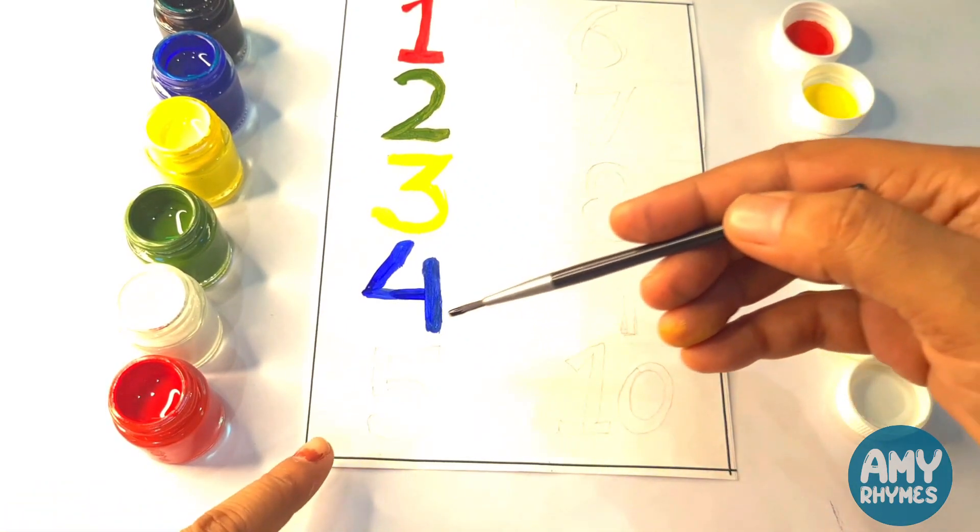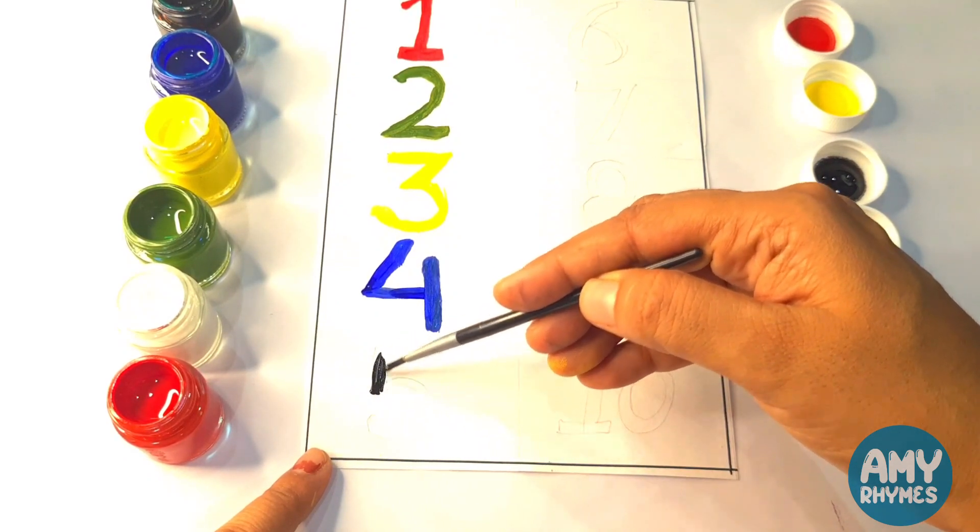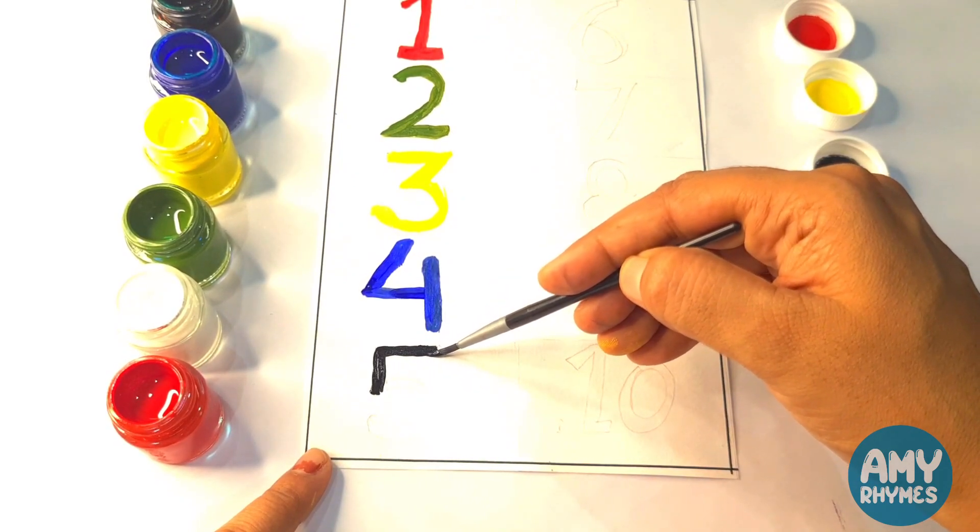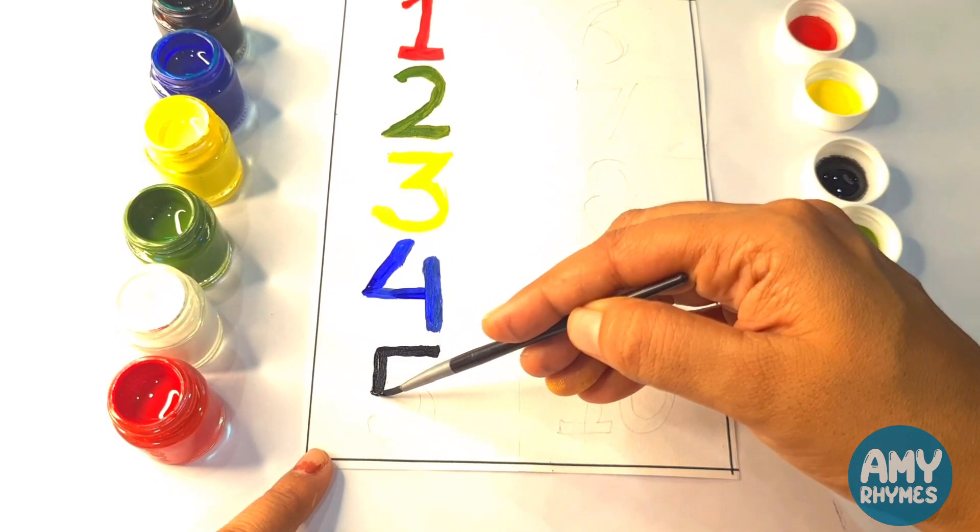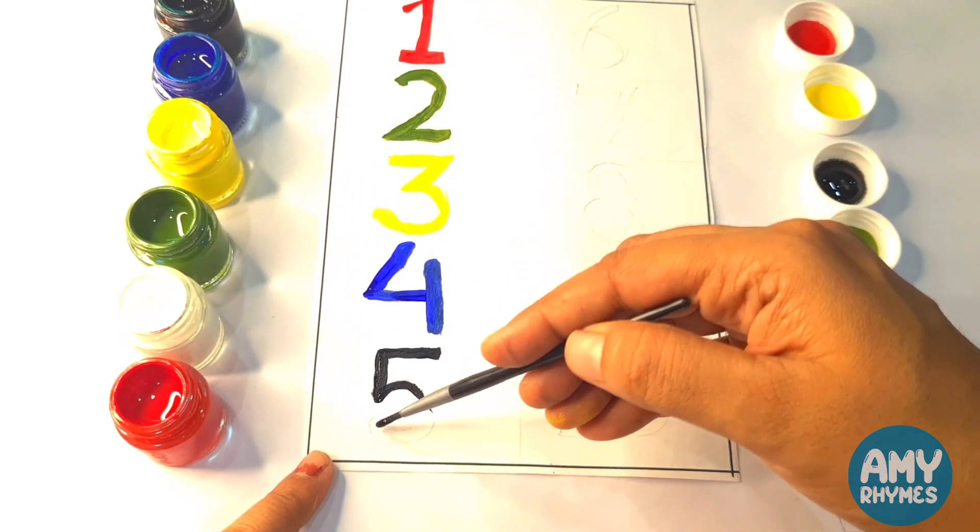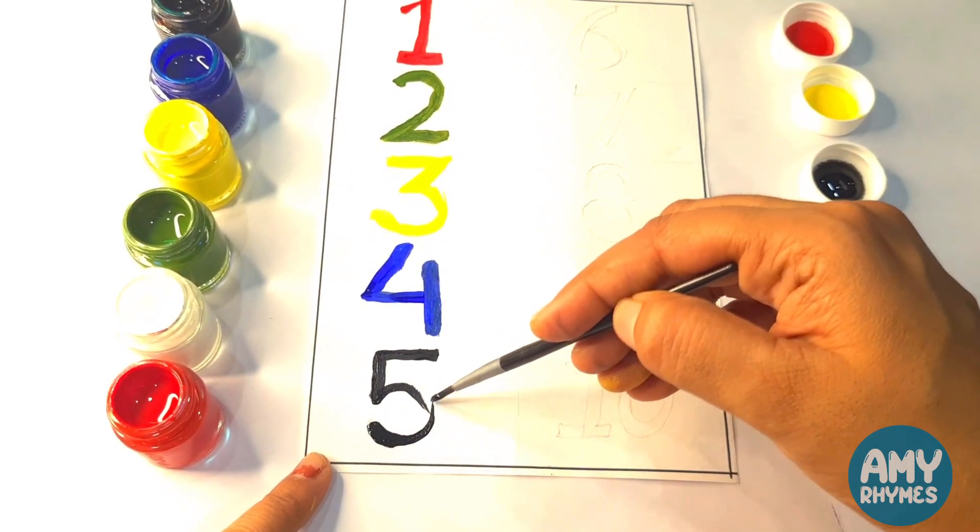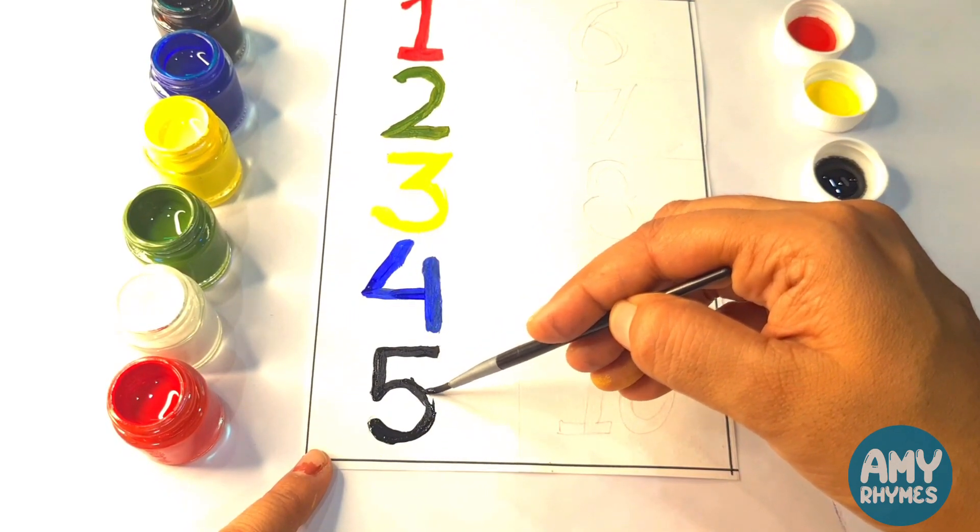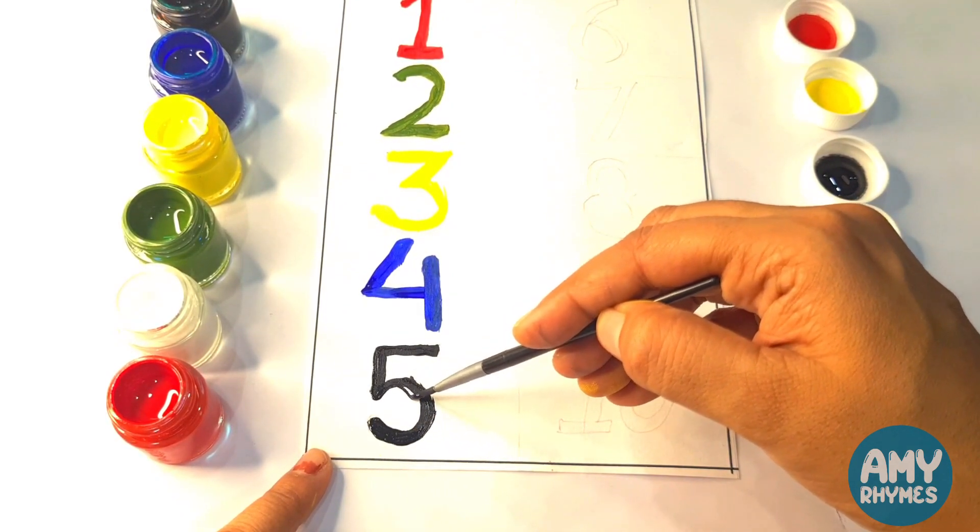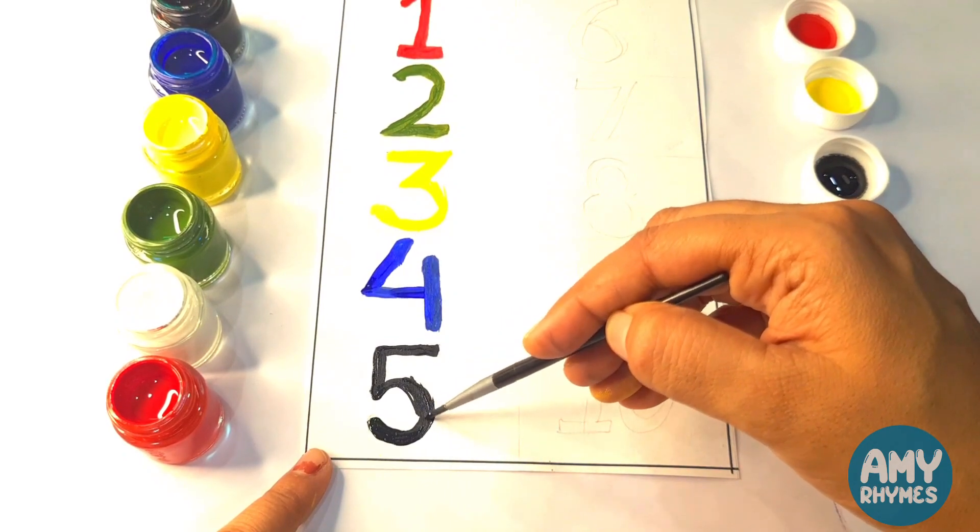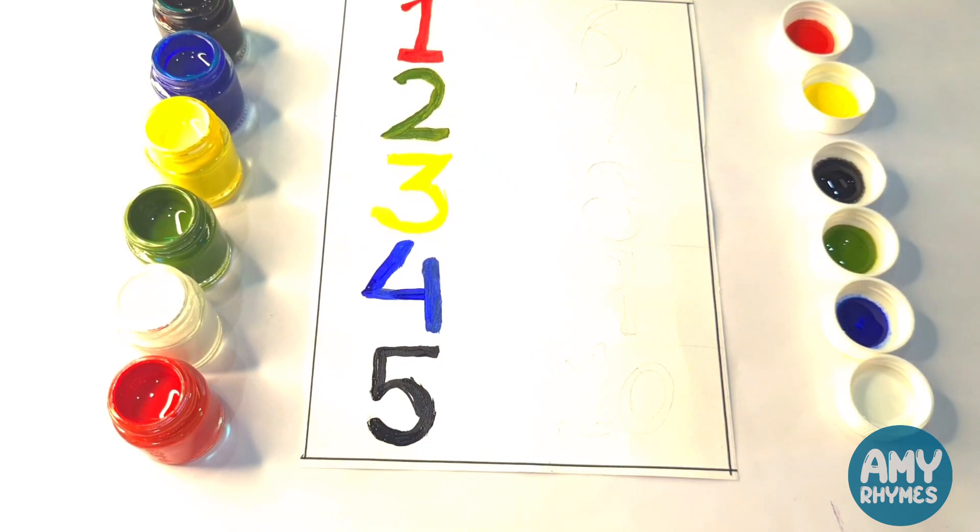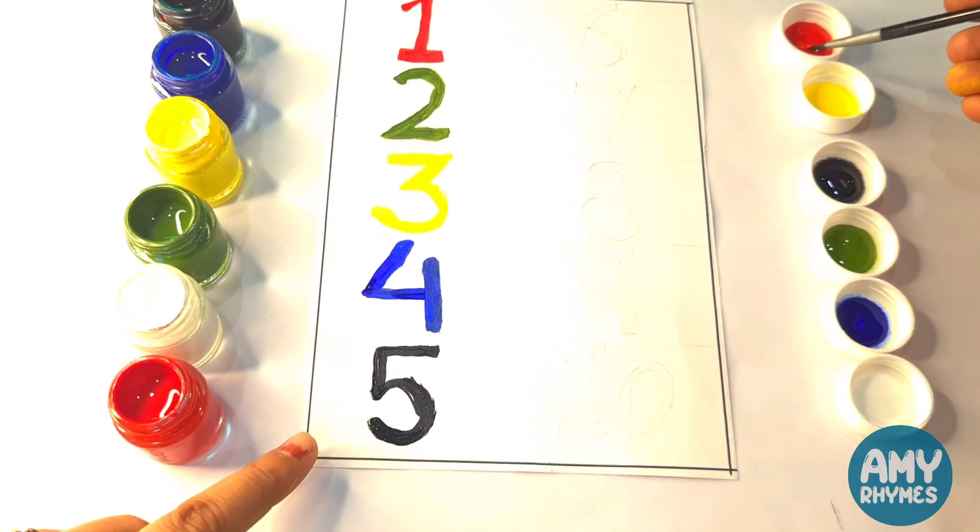Next is black. We paint five with black color. This is black color and we are painting five. Wow, it's so pretty. It's done. Next is six, so we paint six with red color.